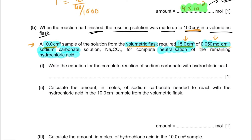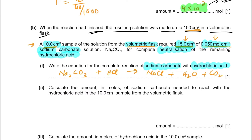Write the equation for the complete reaction of sodium carbonate with hydrochloric acid. Na₂CO₃ reacts with HCl to give sodium chloride, water, and carbon dioxide. Balancing: Na₂CO₃ + 2HCl → 2NaCl + H₂O + CO₂. The molar ratio of Na₂CO₃ to HCl is 1:2.